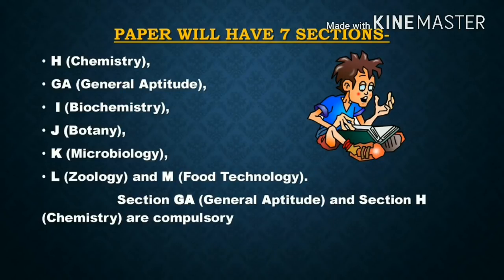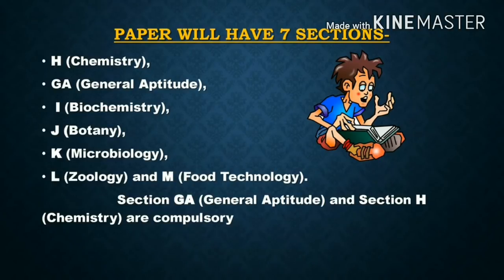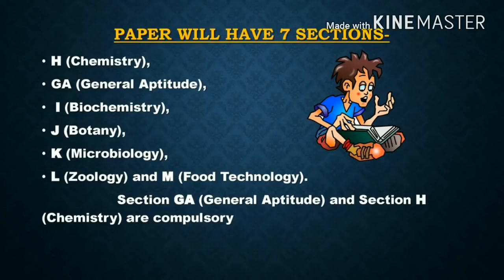Since Chemistry carries 25 marks, you can't skip it. If you prepare some amount of Chemistry, you can easily get 10 marks from that part. From the remaining five subjects — Biochemistry, Botany, Microbiology, Geology, and Food Technology — you have to select any two to attempt in the exam. In the exam you will see all sections, but you must pre-decide which two subjects you are going to attempt, and prepare accordingly.